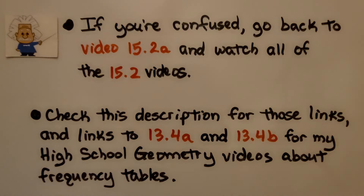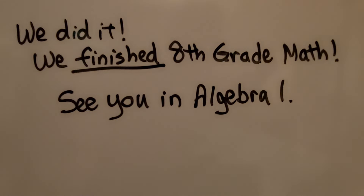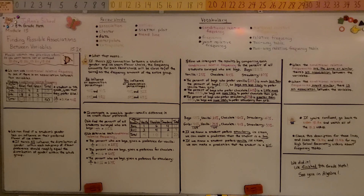If you're one of my regular subscribers, chances are you've watched all my videos in order. If you stumbled across this video and you're confused, go back to video 15.2a and watch all the 15.2 videos — A, B, C, D, and then E again. Check the description for links to those videos and links to 13.2, 13.4a, and 13.4b for high school geometry videos about frequency tables, relative frequency, marginal, and conditional. We finished 8th grade math — this was the last lesson. I'll see you in Algebra 1. I have an Algebra 1 playlist that will take you in consecutive order through the entire course. I hope you have a wonderful day and I wish you well as you journey forward in math.